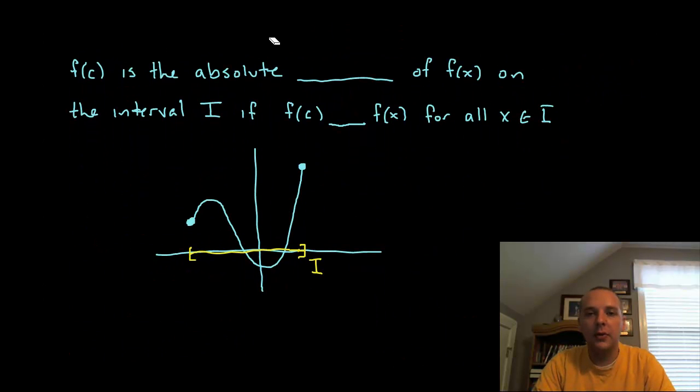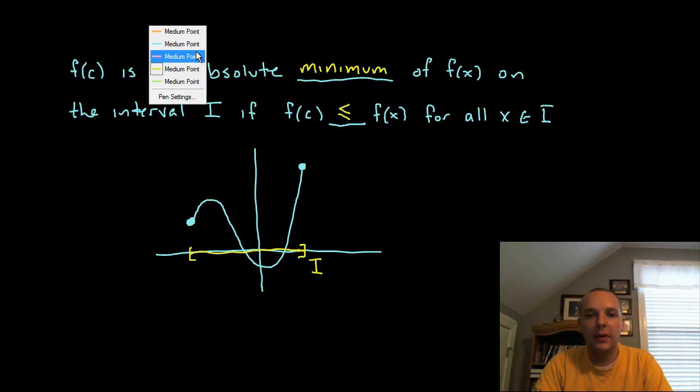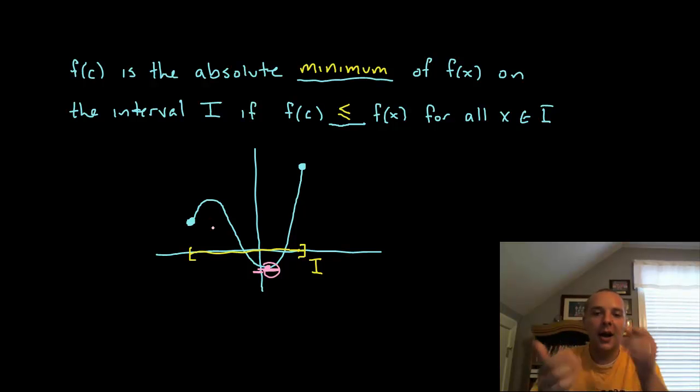It has almost an identical definition for minimum. f of c is the absolute minimum of f of x on the interval I if f of c, that particular y value, is lower than or less than or equal to all the other y values in the given interval. So here I scan the function and I see what's the lowest y value that this guy ever attains. It looks like it would be right here. So this point right here would be your absolute minimum.